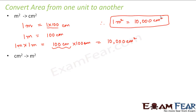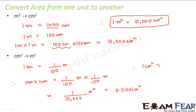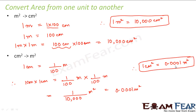Similarly, for the vice versa — centimeter square to meter square — we know one centimeter equals one divided by 100 meters. Therefore, one centimeter squared equals one by 100 meter into one by 100 meter, which equals one by 10,000 meter square, or 0.0001 meter square. So one centimeter square is equal to 0.0001 meter square. This is how we convert area from one unit to another.